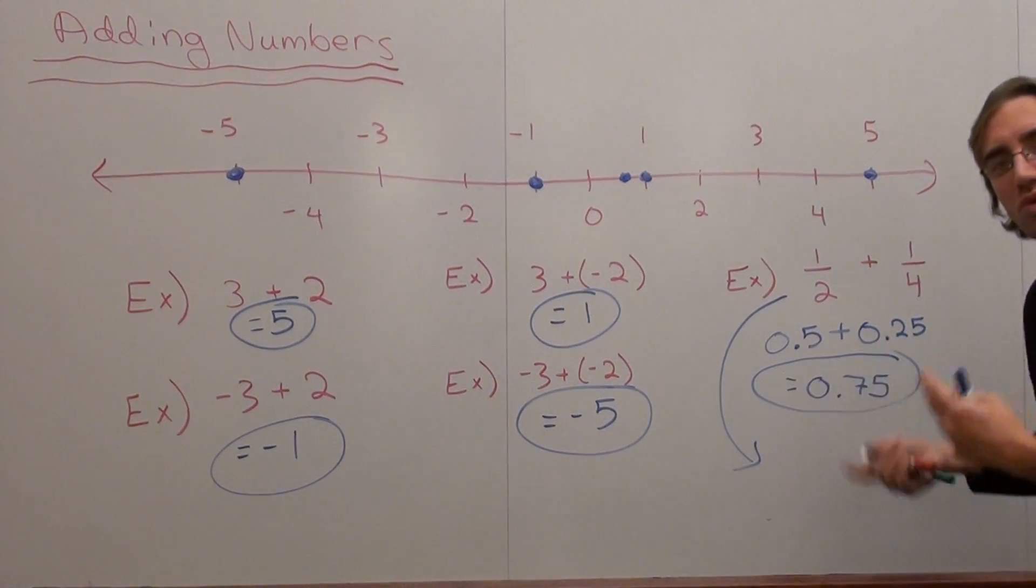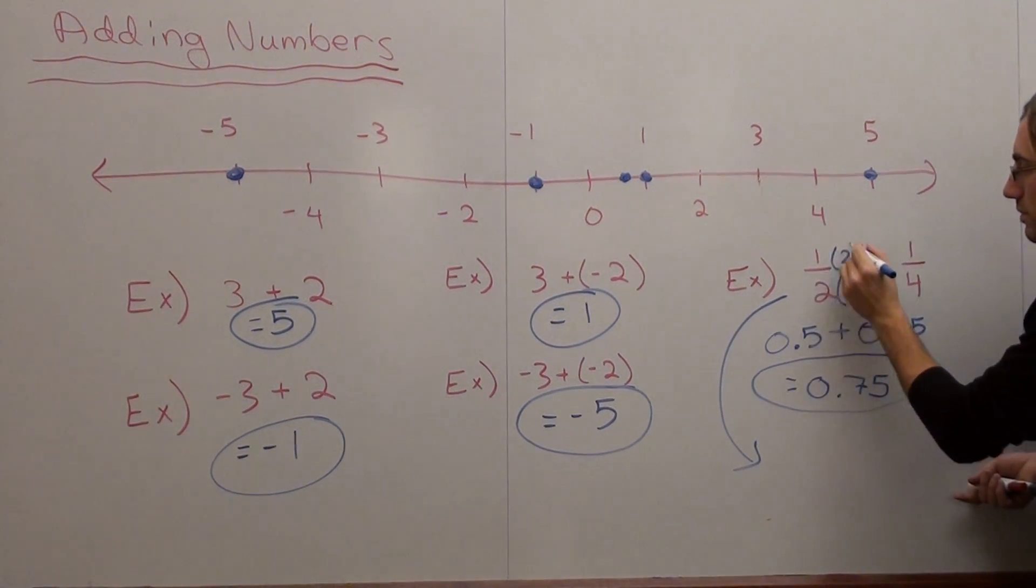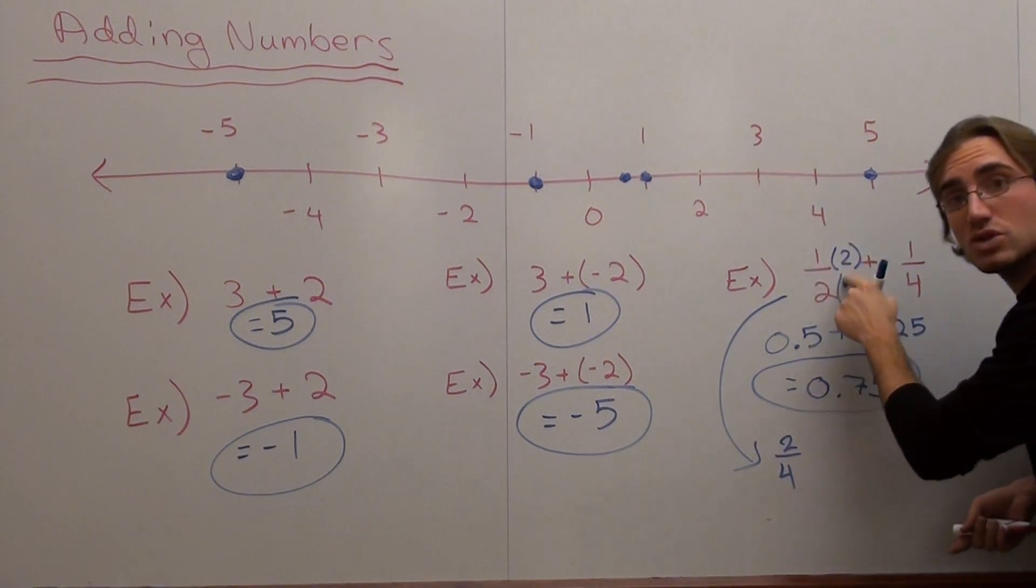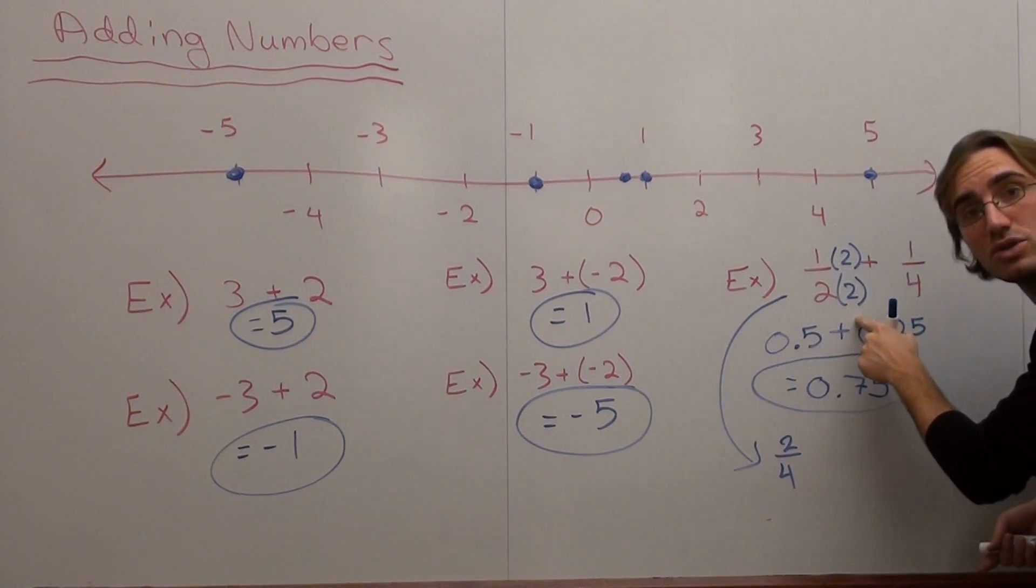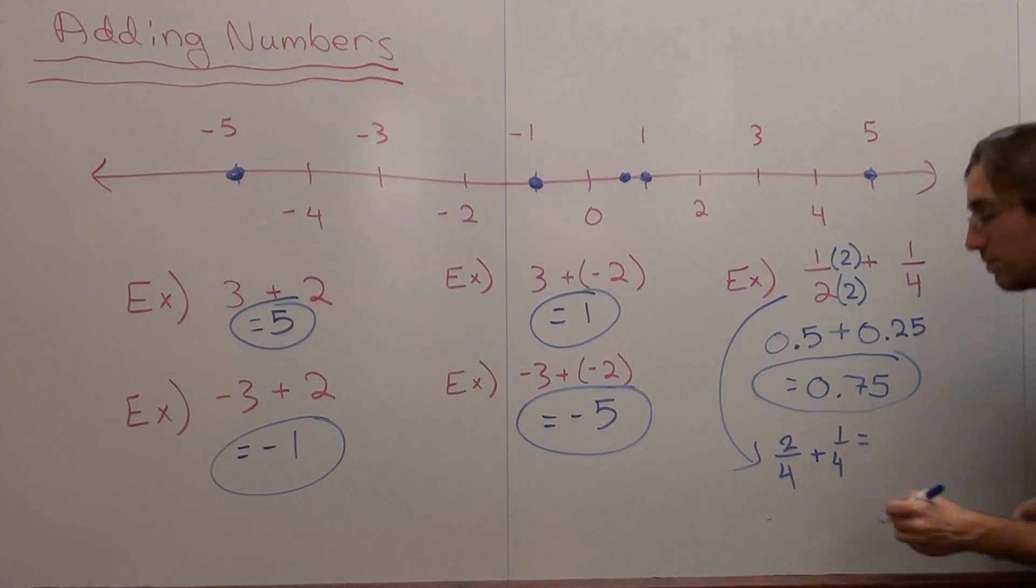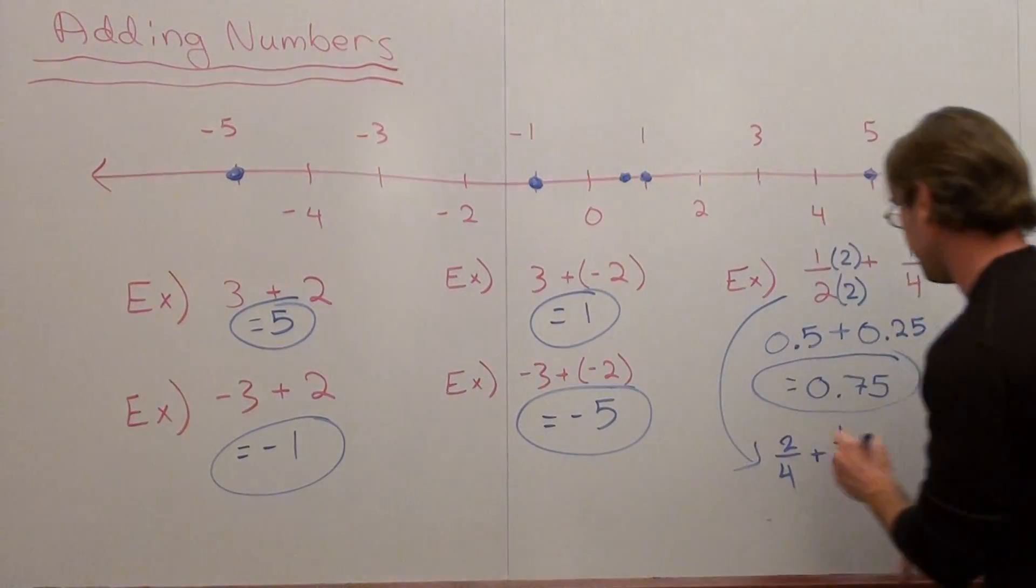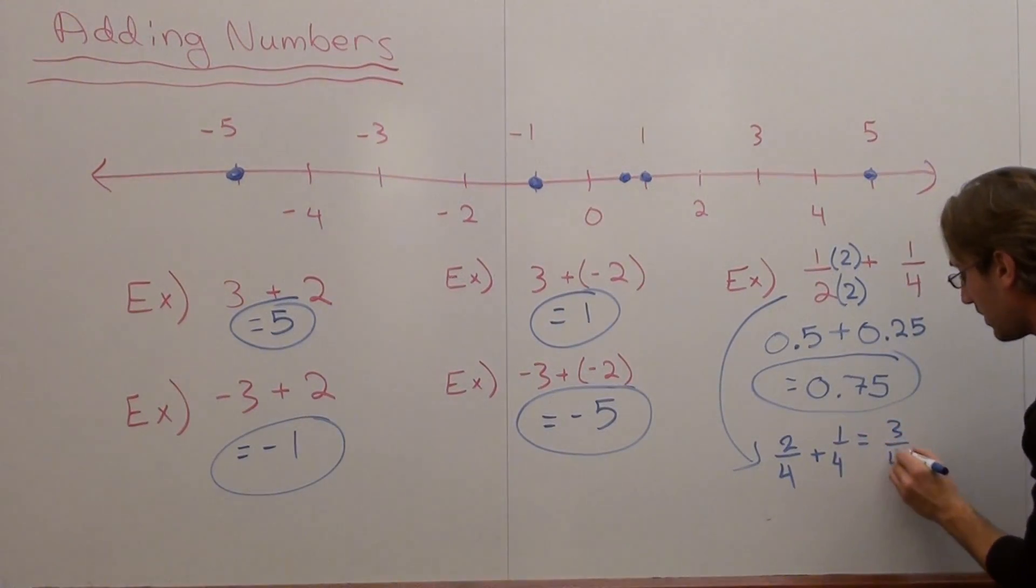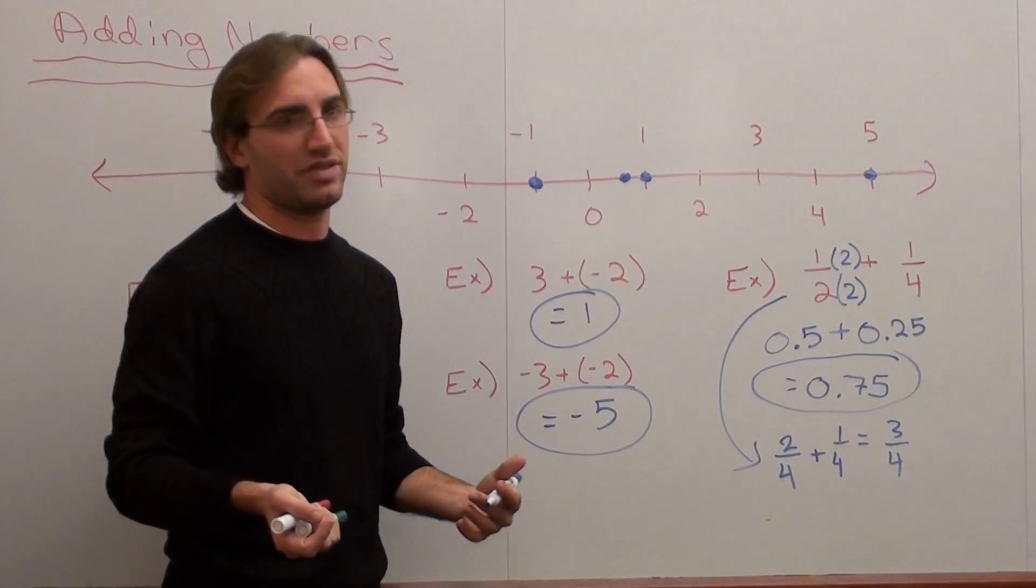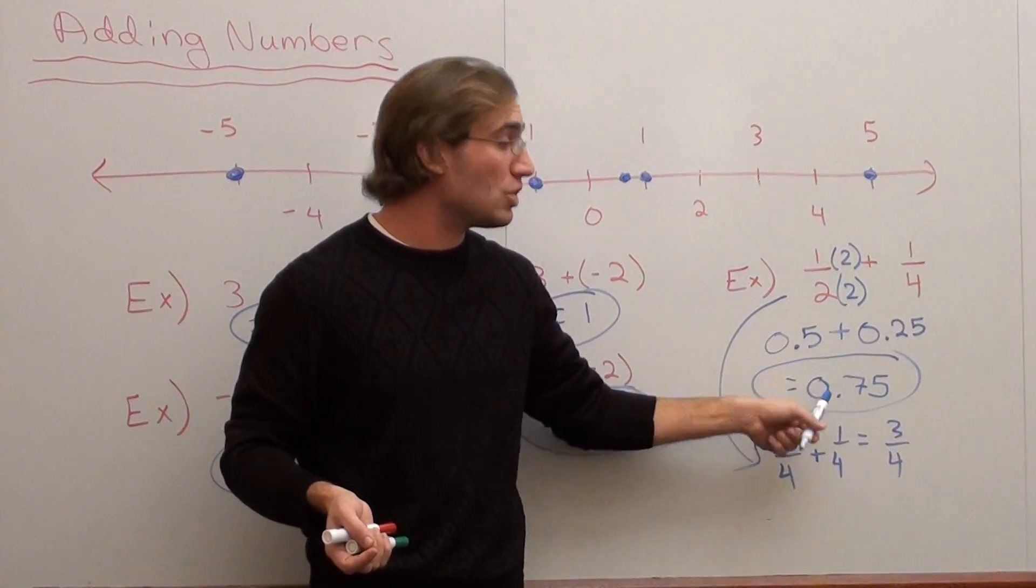How do I get a 2 to become a 4? What do I have to multiply it by? So 1 times 2 is 2, 2 times 2 is 4, plus 1 fourth. 2 fourths plus 1 fourth is 3 fourths, and 3 divided by 4 is the same thing as 0.75.